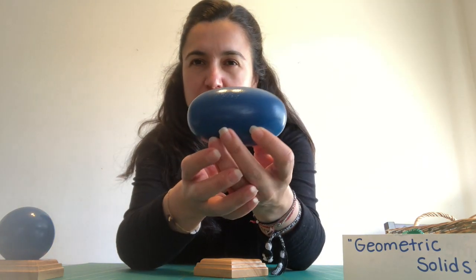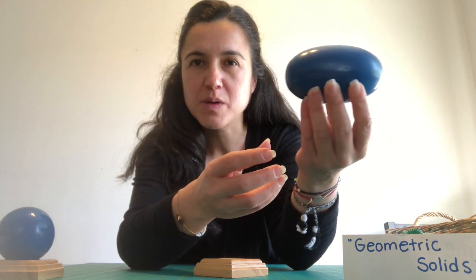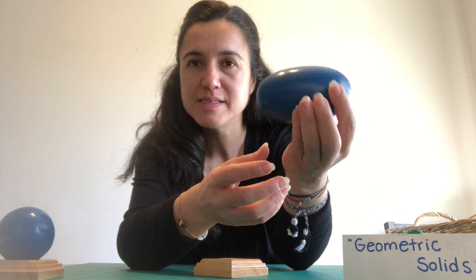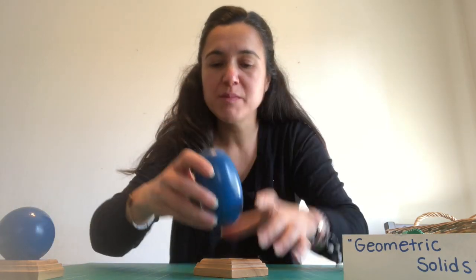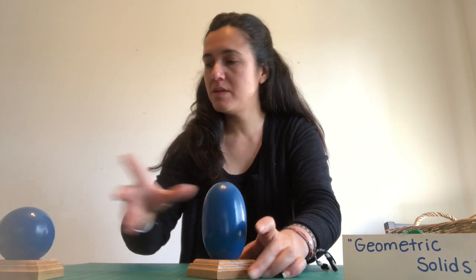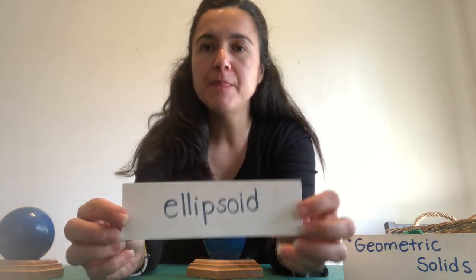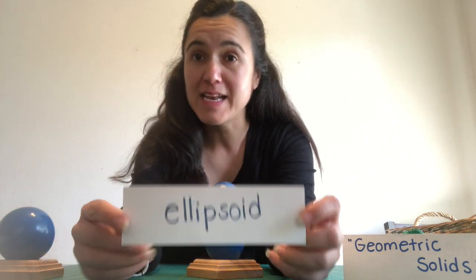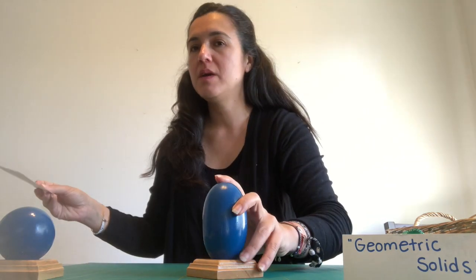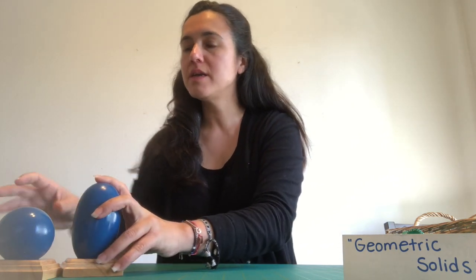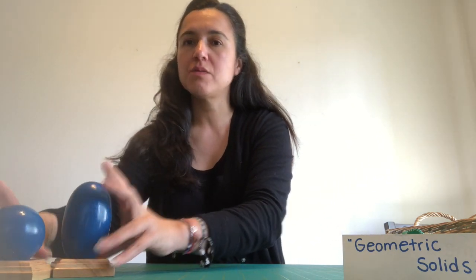This one looks like a cucumber or like a watermelon or like a football. And you know what's the name of this? It's called ellipsoid. Ellipsoid. And I'm going to put the ellipsoid next to the sphere right there.